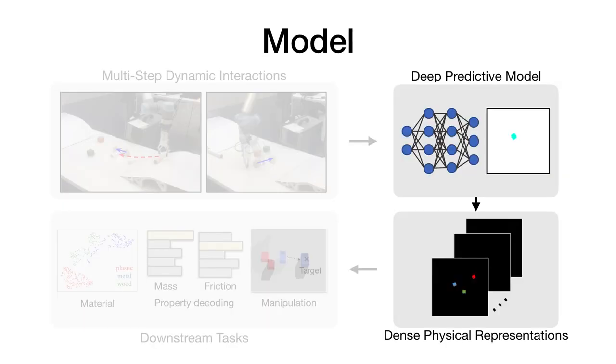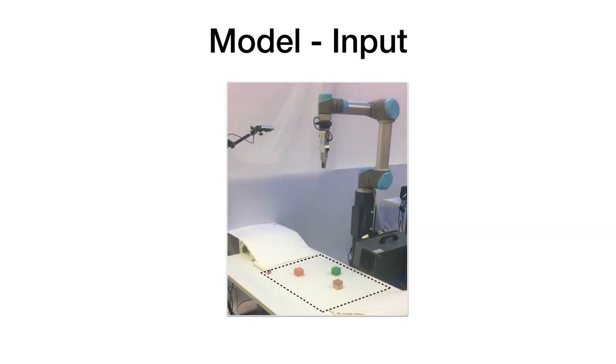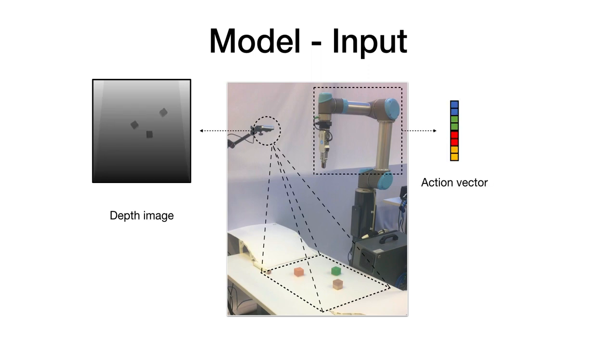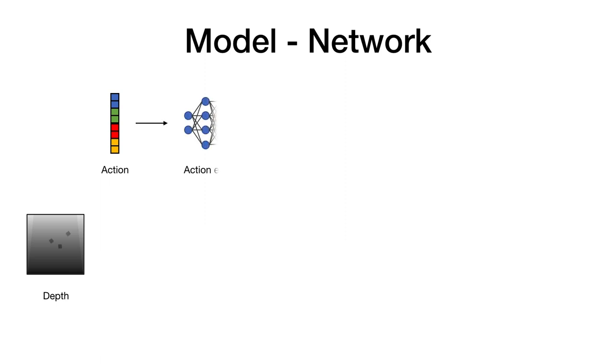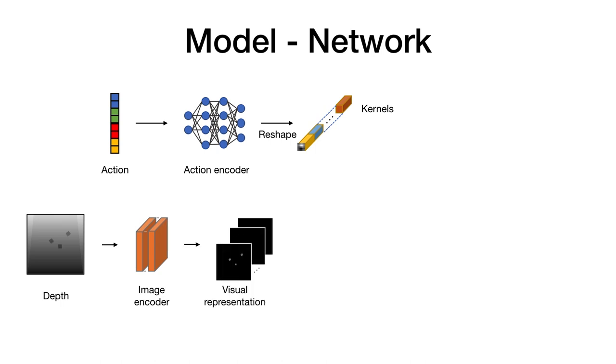Here are the details of our model. Our model takes as input the current state, modeled as a depth image, and an action vector. The action vector is fed through an encoding network that generates a set of convolutional kernels. Simultaneously, the depth image is passed into another network that extracts visual signals and outputs a visual representation.